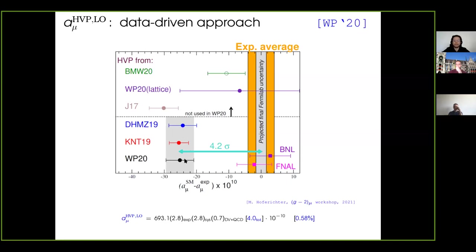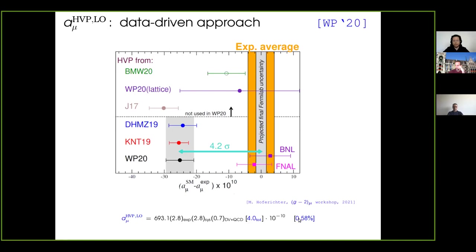In the white paper, this KNT result was combined with another group performing this integral of the R ratio data. The combination was done through a merging procedure rather than a real average, such that the white paper result doesn't have a smaller error than the two contributions. The reason for this is that there was a very exacting control channel by channel of the two groups. There were also constraints from the time-like pion form factor. The discrepancy between KLOE and BaBar was treated in such a way that there is a conservative estimate in the error. This is the 4.2 sigma deviation.